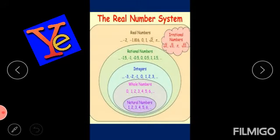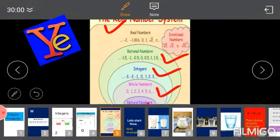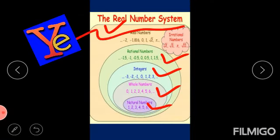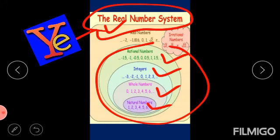So what is a real number? Real numbers are those numbers which include whole numbers, integers, rational numbers, as well as natural numbers. All these numbers are included in real numbers. The whole of this set is called real numbers.